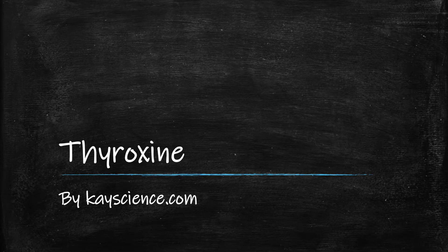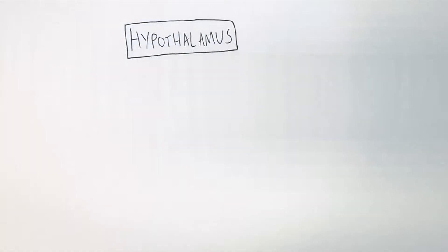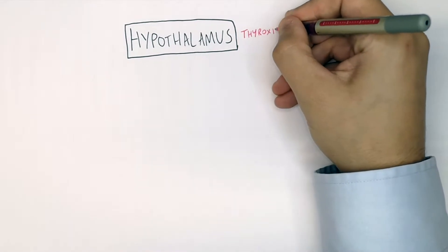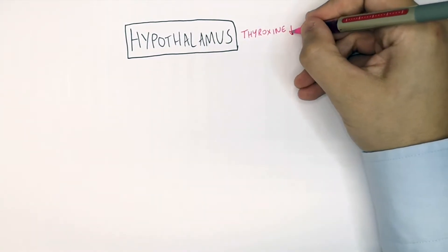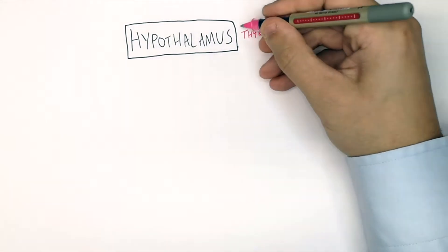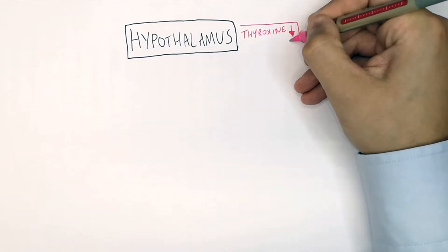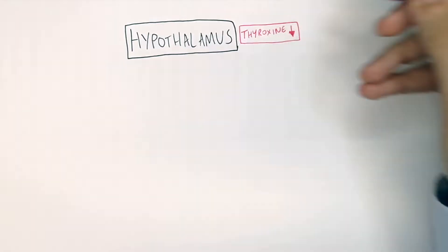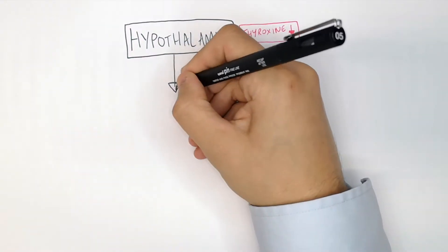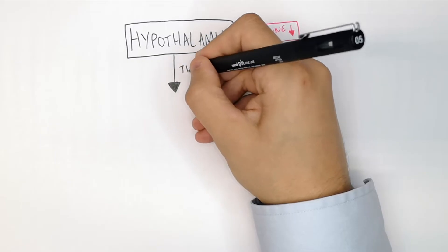Homeostasis of thyroxin by kscience.com. The hypothalamus, below the brain, detects thyroxin levels in the blood. When thyroxin levels are low, the hypothalamus detects this and secretes TRH.